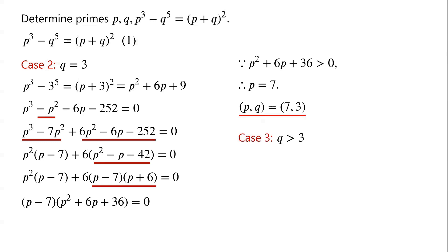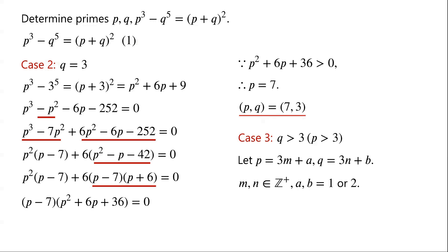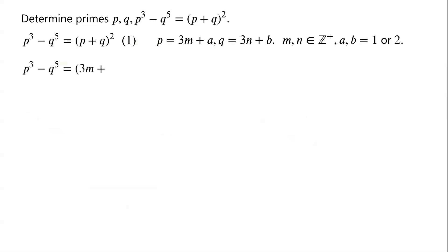Case 3: if q is greater than 3, then of course p must be greater than 3. As both p and q are primes, we let p equal 3m plus a, and q equal 3n plus b, where m and n are positive integers and a and b are either 1 or 2. Then p cubed minus q to the power of 5 equals 3m plus a all cubed minus 3n plus b all to the power of 5.